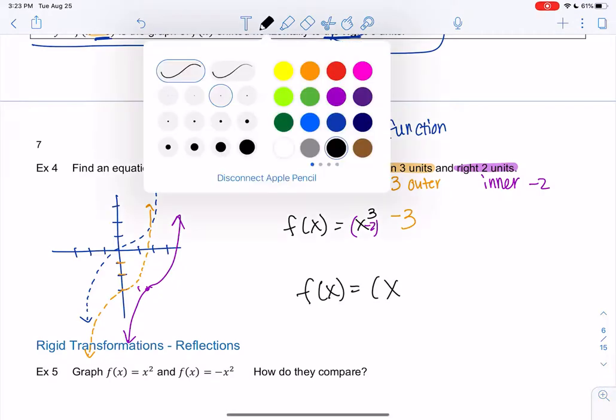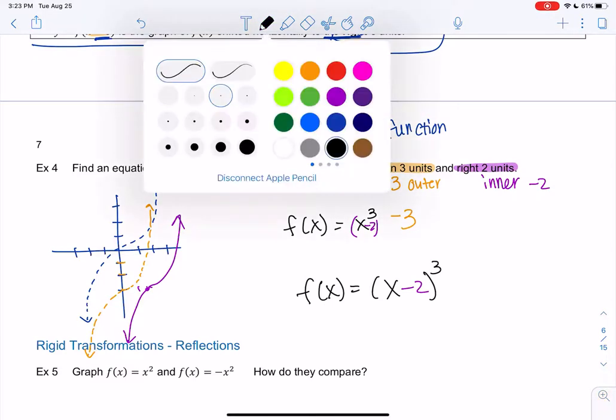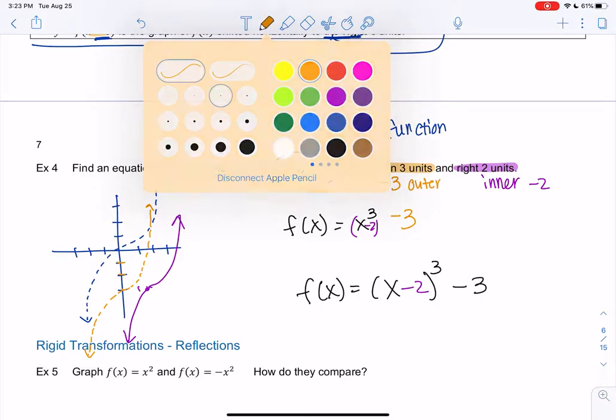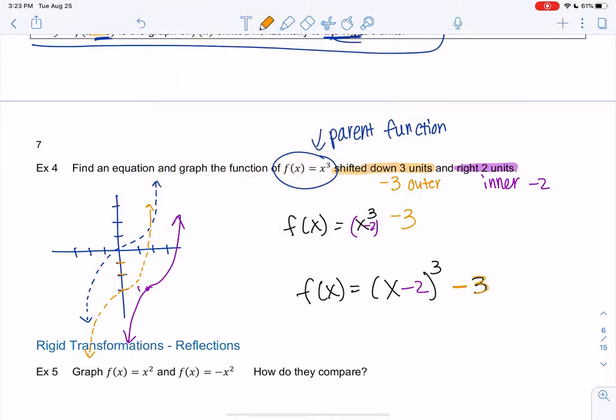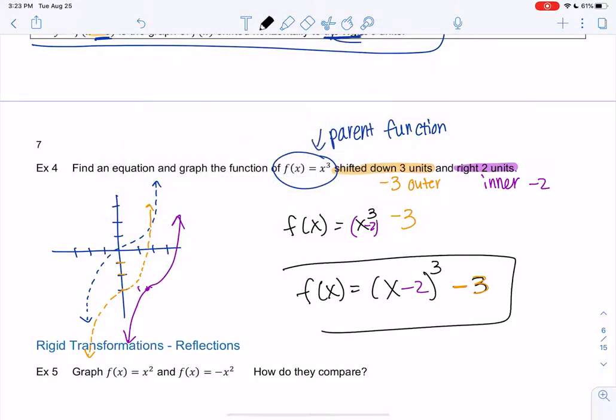So we have x minus 2 because moving to the left or right is an inner function. So that'll be within the parentheses. And then going down 3 is an outer function. So that goes on the outside. And so essentially this used to be at 0, 0, that little flat part on x cubed. And now it would be at 2 because we went to the right 2 and negative 3 because we went down 3. Right? We went to the right 2 and down 3.